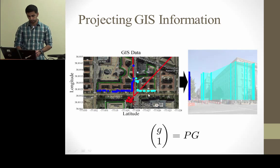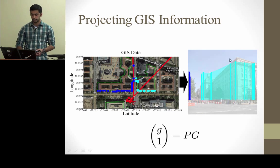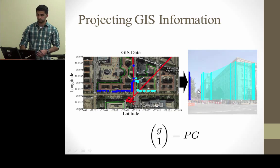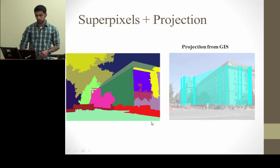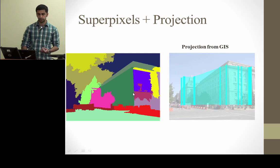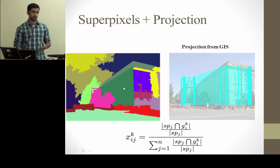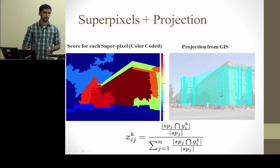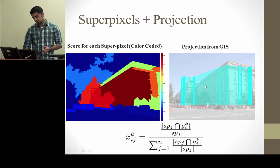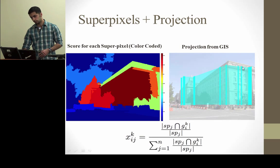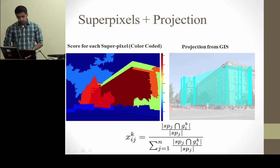Having the two buildings — cyan on the right and dark blue on the left — here are their projections. The one on the right has a large projection that is completely visible, while only a small part of the left building is expected to be seen. Now we have these two sources of information: projections from GIS and superpixel segmentation from image content. We combine them by computing an initial score for each superpixel capturing what percentage of the superpixel is covered by a projection. The dark red parts have a very high score, but the top part of the building is not completely covered.